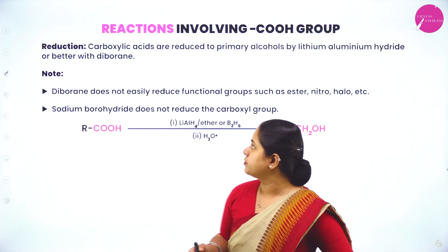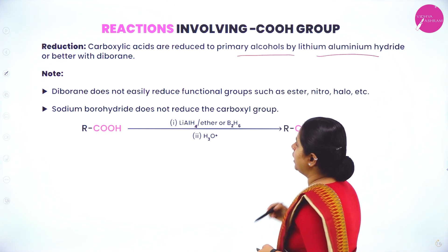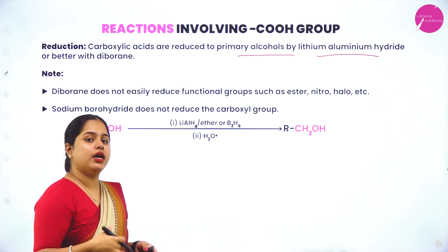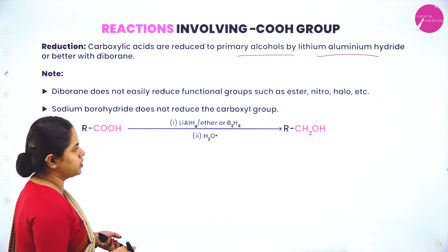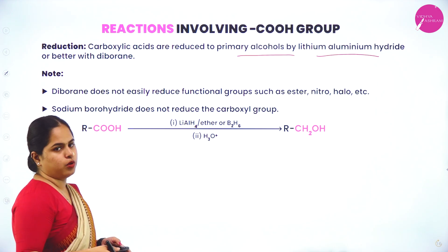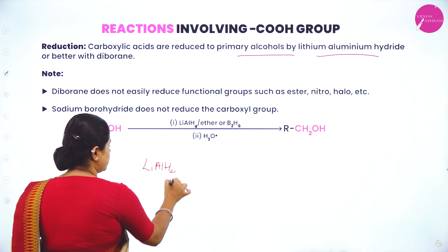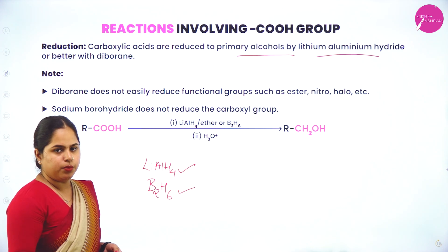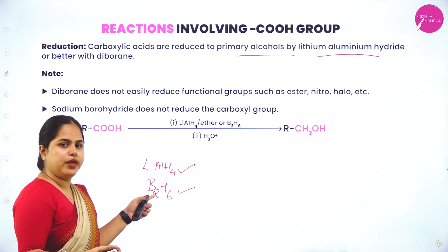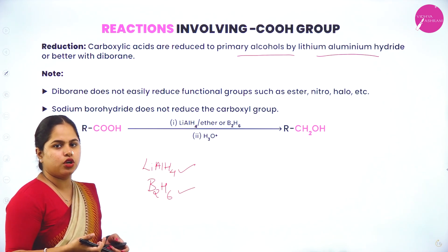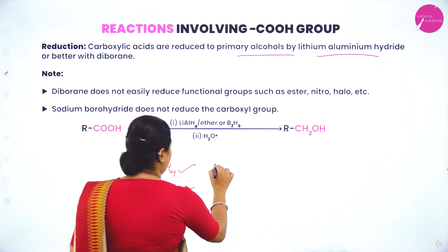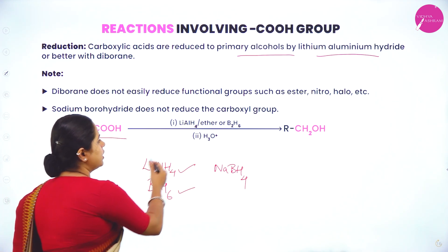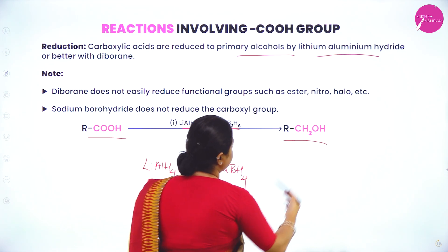Reduction: carboxylic acids are reduced to primary alcohols by lithium aluminum hydride (LiAlH₄) or by diborane (B₂H₆). Diborane does not easily reduce functional groups such as ester, nitro, or halo. Sodium borohydride (NaBH₄) does not reduce the carboxyl group. In presence of LiAlH₄ or diborane, carboxylic acid is converted to the primary alcohol.